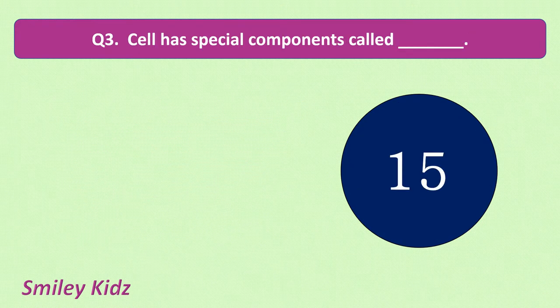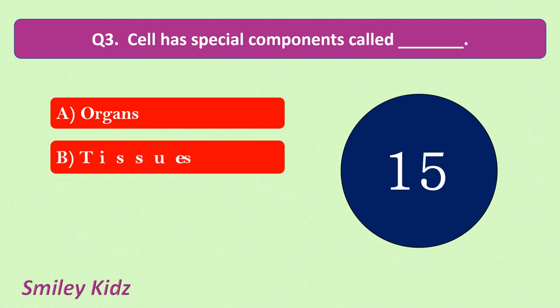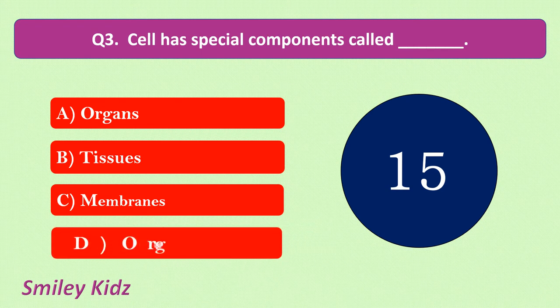Question number 3. Cell has special components called. Your options are: organs, tissues, membranes, organelles. Your time starts now.